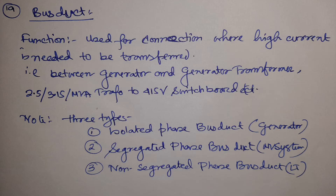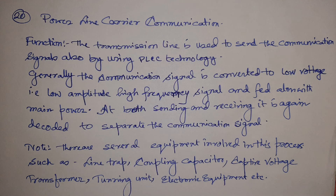Bus ducts are of three types: isolated phase bus duct, segregated phase bus duct, and non-segregated phase bus duct. Isolated phase bus duct is used for generators; segregated phase bus duct is used for MV systems such as 6.6 kV and 11 kV; and for LT systems at 415 volts, non-segregated phase bus ducts are used. I have a video on bus duct — you can check that for more details.